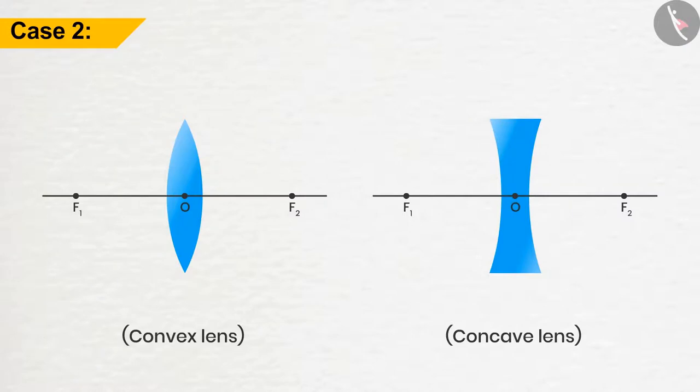In case 2, if the ray of light passes through the focus of the convex lens or appears to go towards the focus of the concave lens, then after refraction it will emerge parallel to the principal axis.